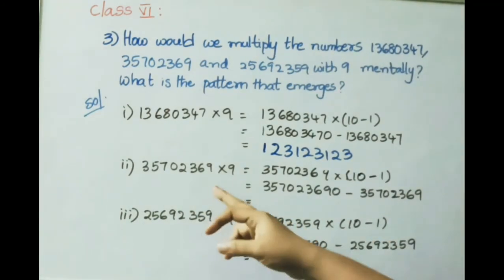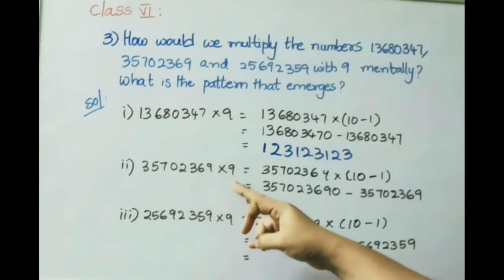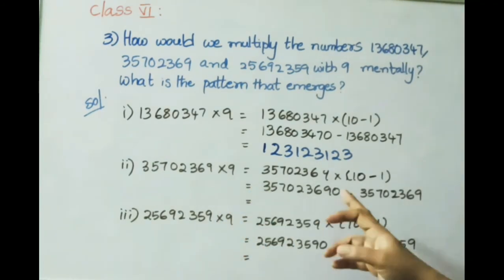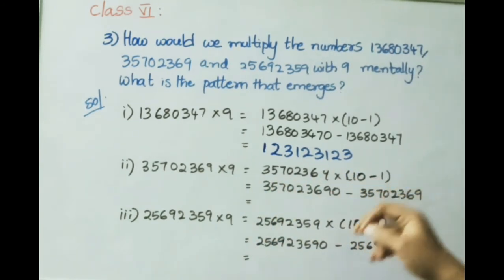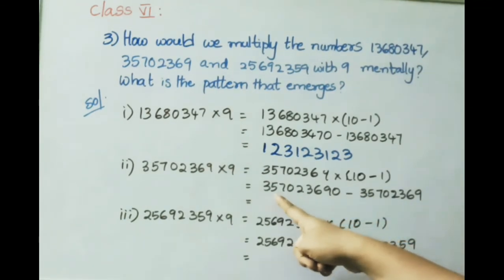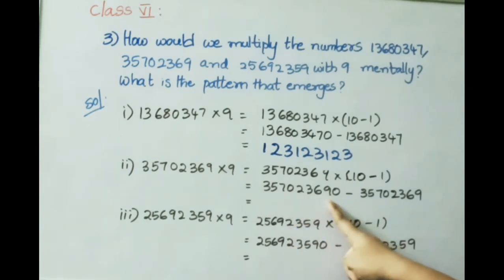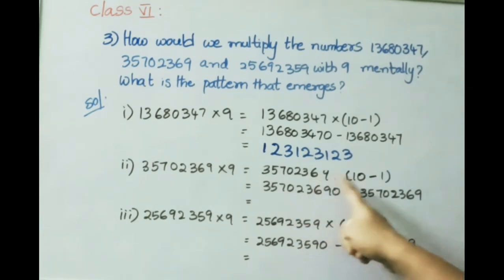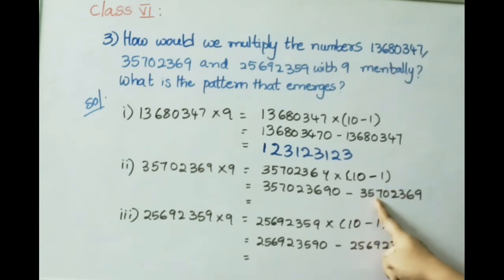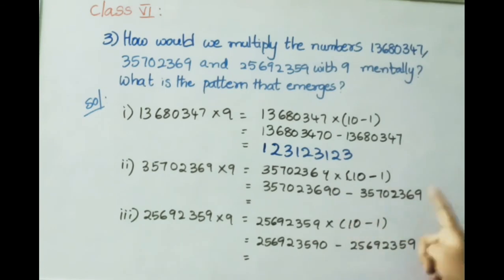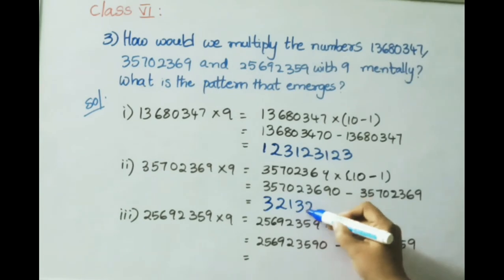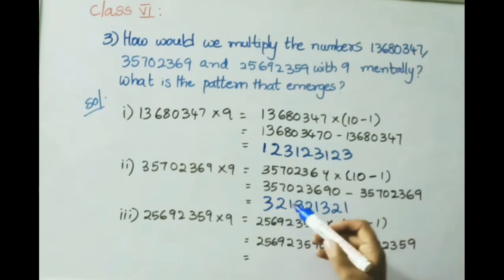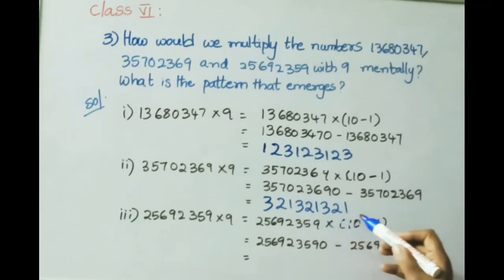For 3 crore 57 lakh 2369 multiplied by 9: write 9 as 10 minus 1. Multiply by 10 to get 35 crore 70 lakh 23,690, then subtract 3 crore 57 lakh 2369. The answer is 32 crore 13 lakh 21,321.